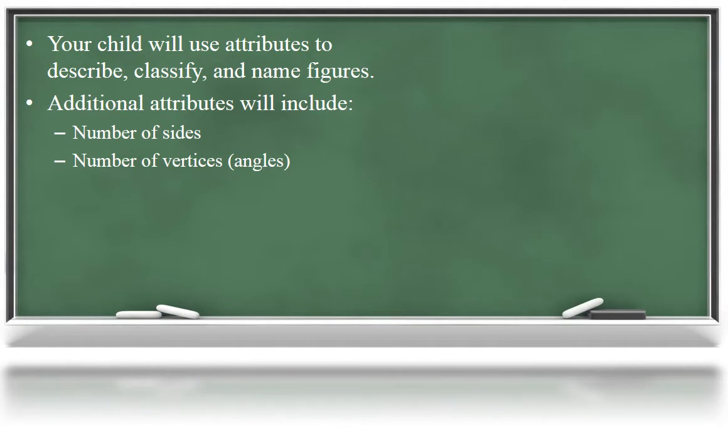Additional attributes can then be identified, including congruent sides, right angles, and parallel sides to further classify polygons.